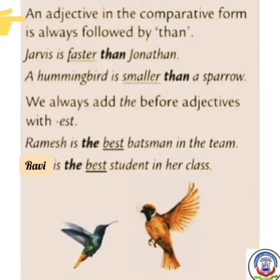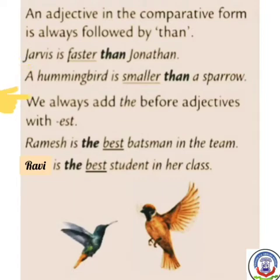An adjective in the comparative form is always followed by 'than'. Example: a hummingbird is smaller than a sparrow — do ka comparison hai, toh we use 'than'. We always add 'the' before an adjective with -est. Example: Ravi is the best student in his class — Ravi poore class mein sab se achcha hai. So we have used 'the' before 'best'.